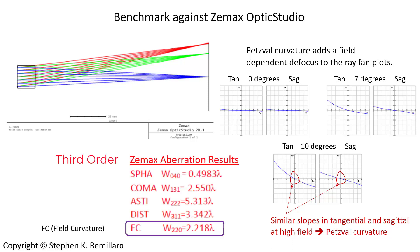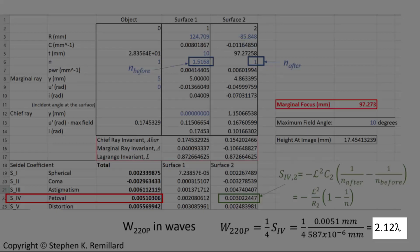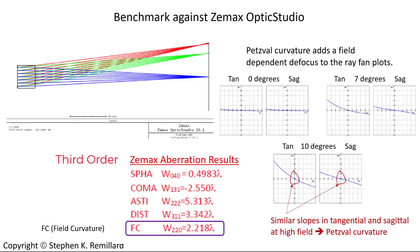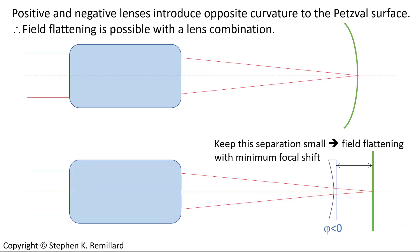The aberration coefficients bear that out pretty well. The field curvature coefficient, W220, is found to be 2.218 waves. Compare that to what we got with the Excel spreadsheet, 2.12 waves. And the benchmarking is in fairly good agreement with the spreadsheet.